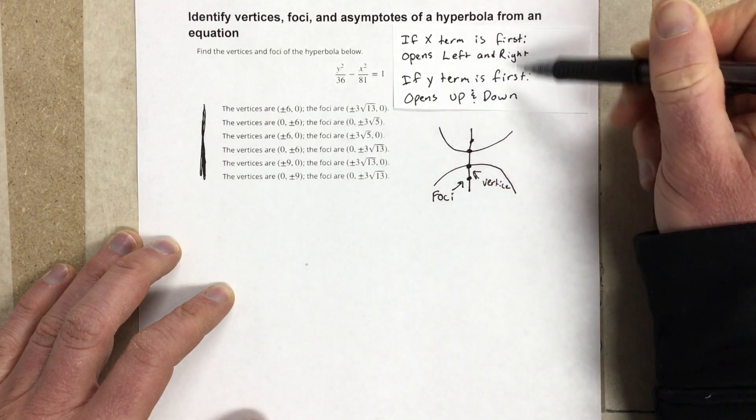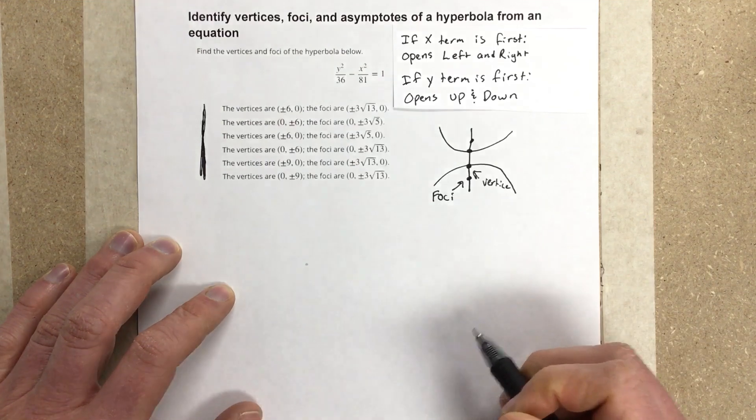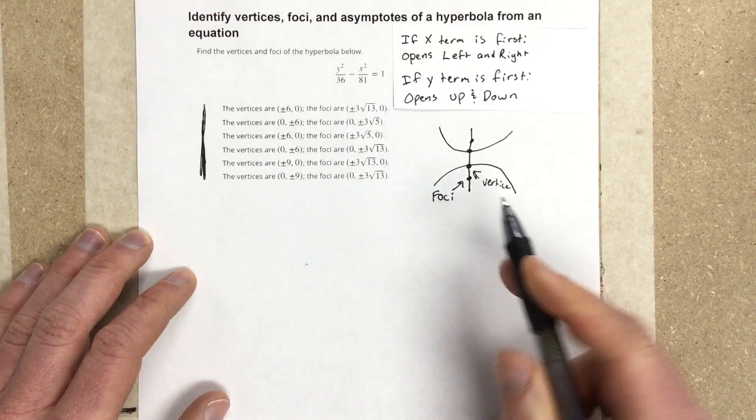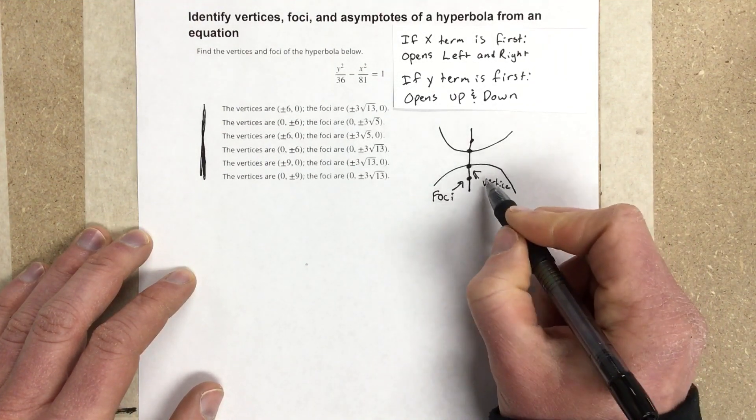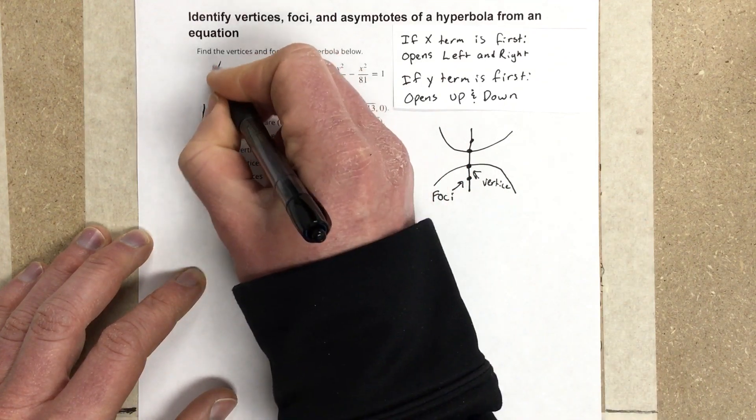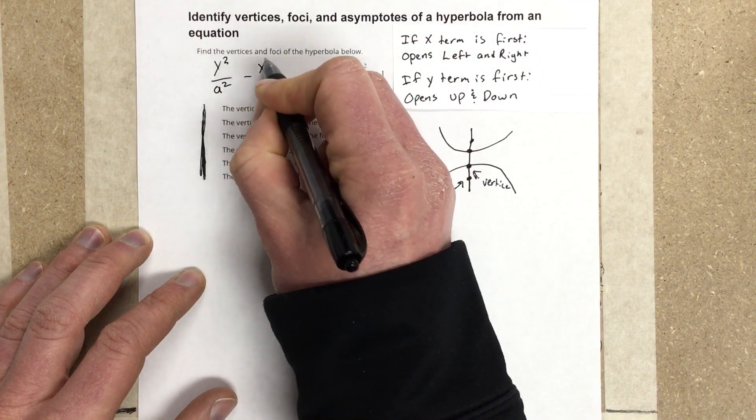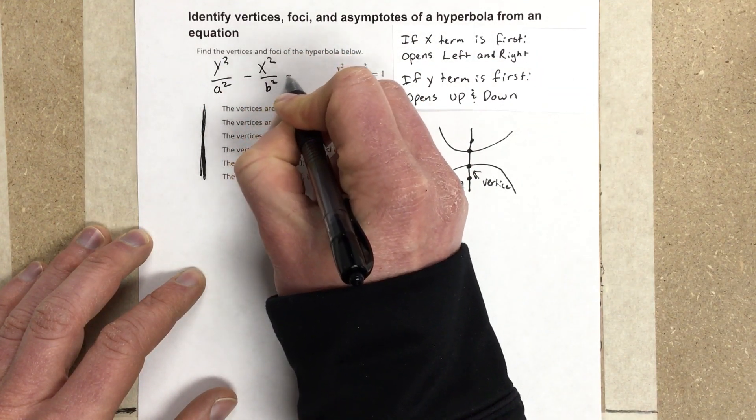By knowing this little piece here, we can kind of get a picture of what our hyperbola should look like, and that helps us to know how to find both the vertice and foci coordinates, because this equation is written as y squared over a squared minus x squared over b squared is equal to 1.